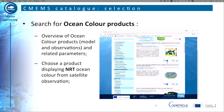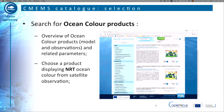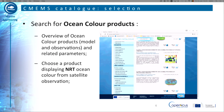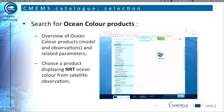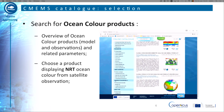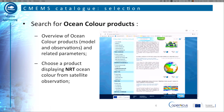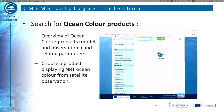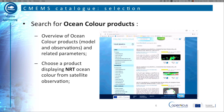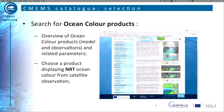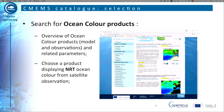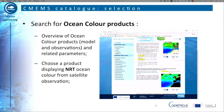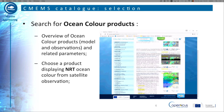A second approach consists in selecting the products coming from satellite observations. To do so, we return to the main menu and select Models and Ocean Chlorophyll, but select Satellite Observations instead. To refine the request on OceanColor observations only, we indicate in the keyword search area the word OceanColor. Finally, to access near real-time products, we click on the button near real-time products.